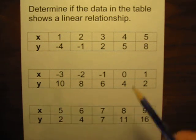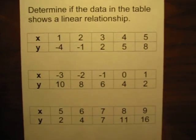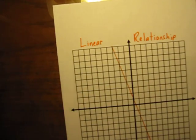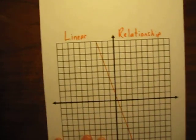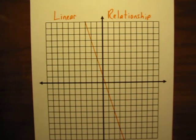Before we talk about whether the numbers in each data table here show a linear relationship or not, let me back up and talk about linear relationships quickly. On a graph, if you were to graph a linear relationship, as the line suggests, it would make a straight line.